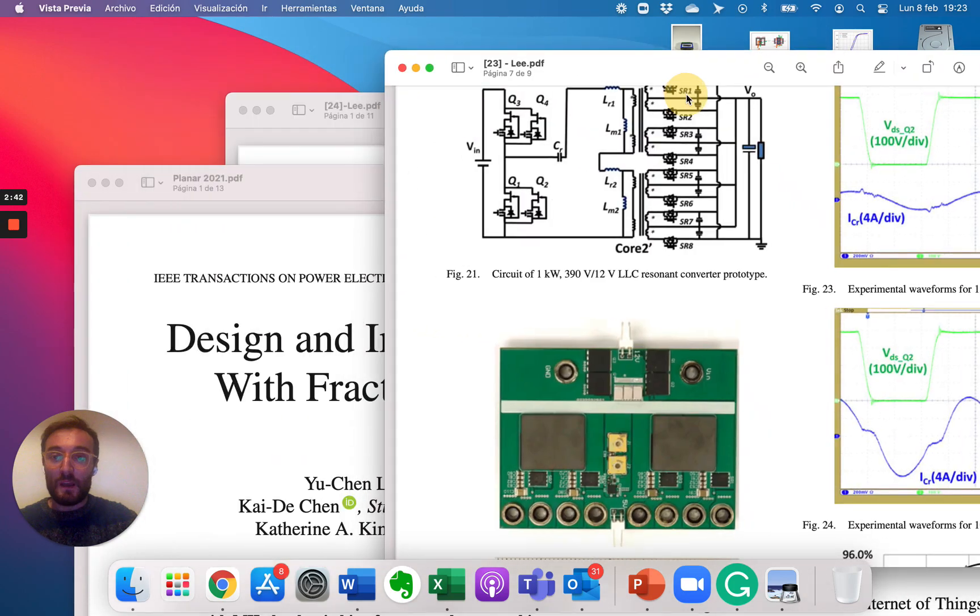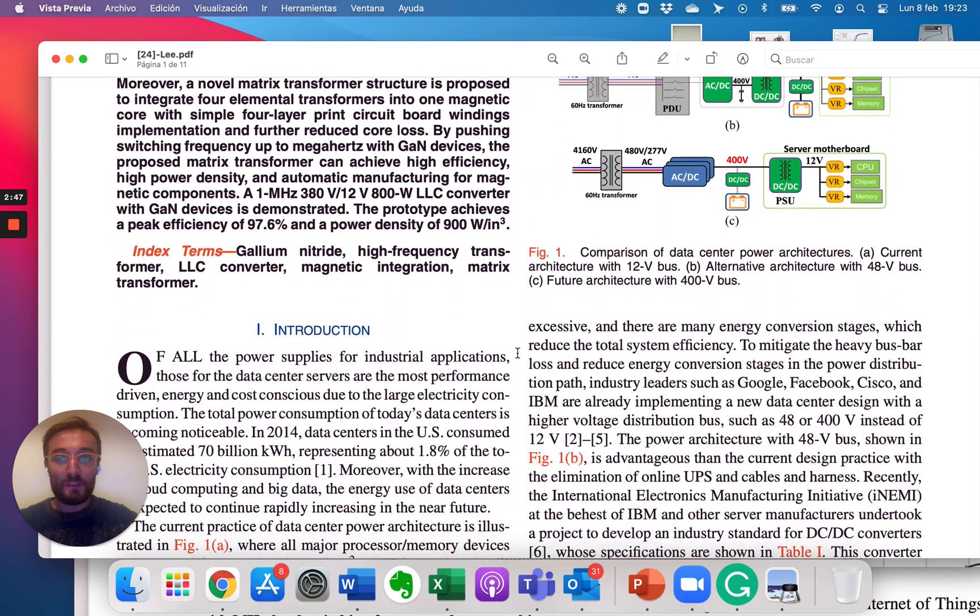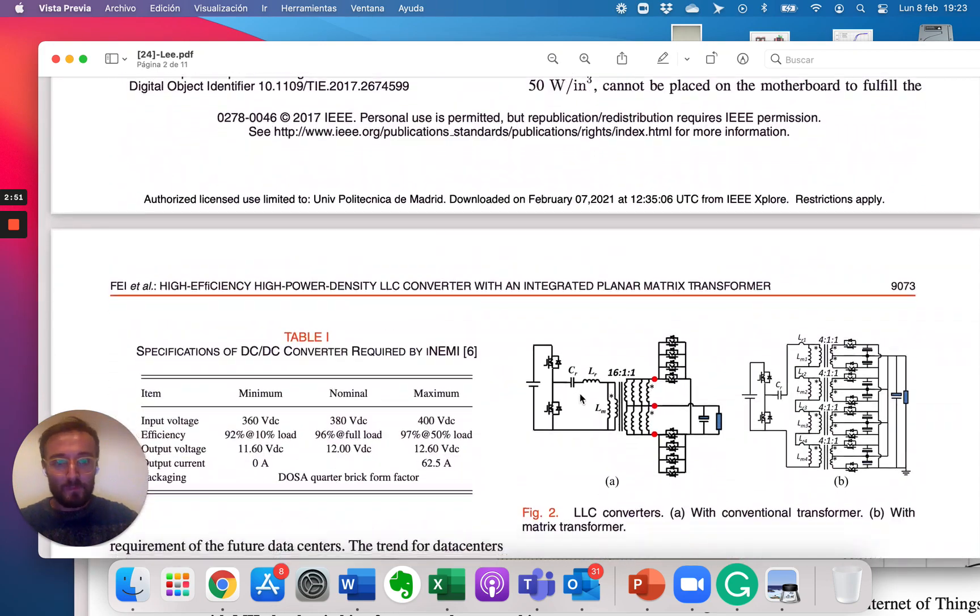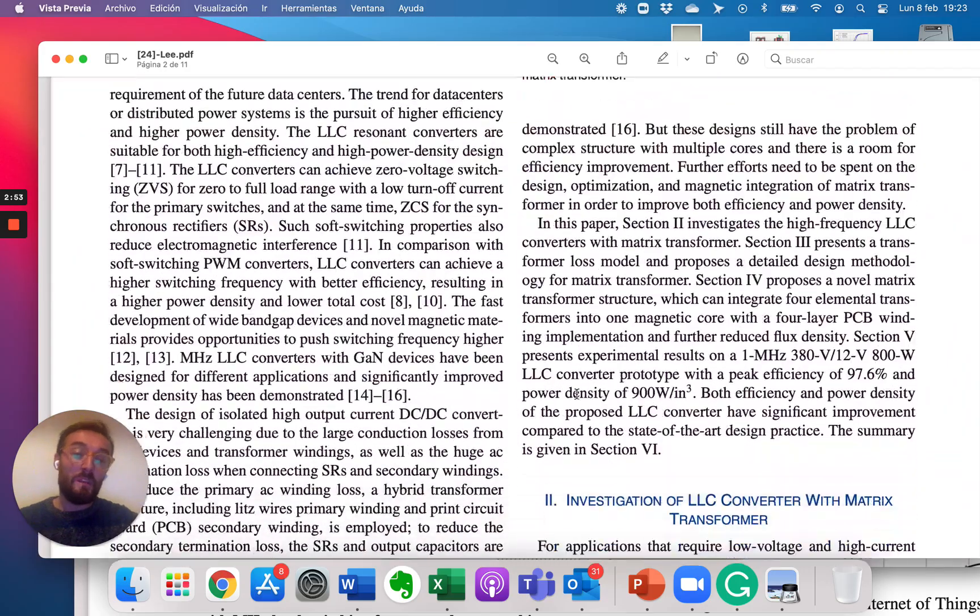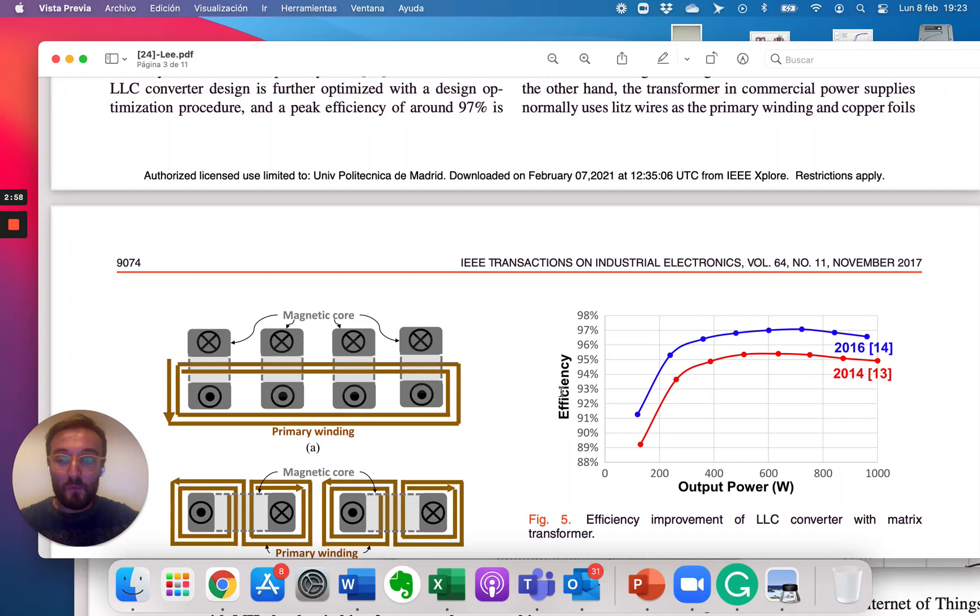Four years later, the same team published this article where they achieved even higher power density. And the main difference is that in this case, they tried to reduce even more the flux density by doing some cancellations.